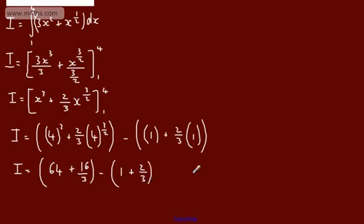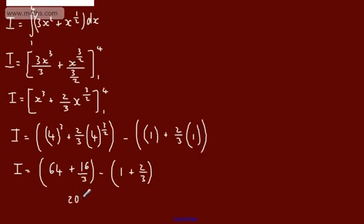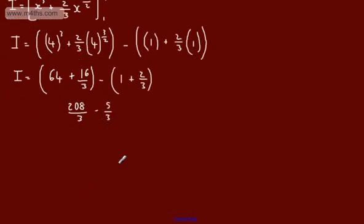So let's evaluate that now, and we can put that straight through the calculator. So we're going to have 64 plus 16 over 3, and that's going to give me 208 over 3, and then we're going to minus from this, this is going to be 5 over 3. So we can say from there that this is going to be 203 over 3.